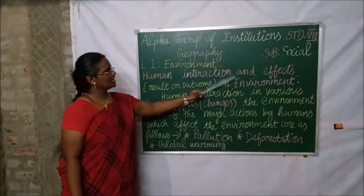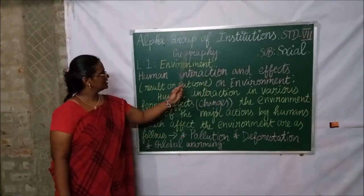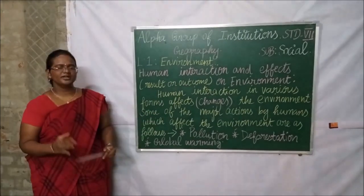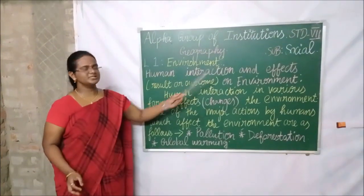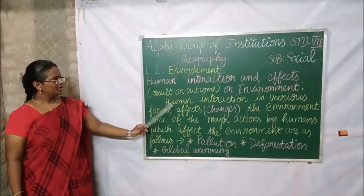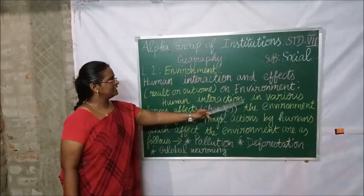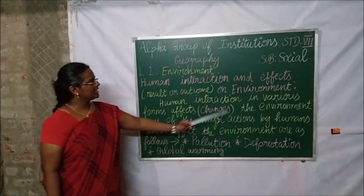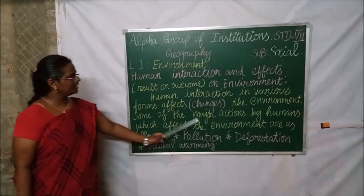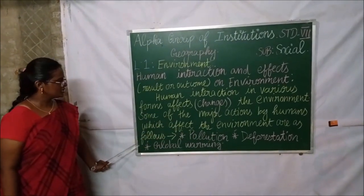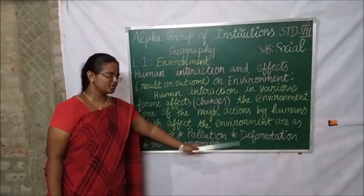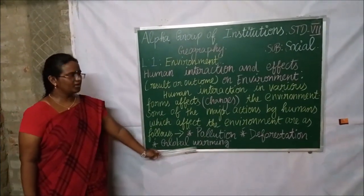Now let's see the new topic: human interaction and effects on environment. Effects means results, outcomes, or consequences. Human interaction in various forms affects the environment. Some of the major actions by humans which affect the environment are: pollution, deforestation, and global warming.